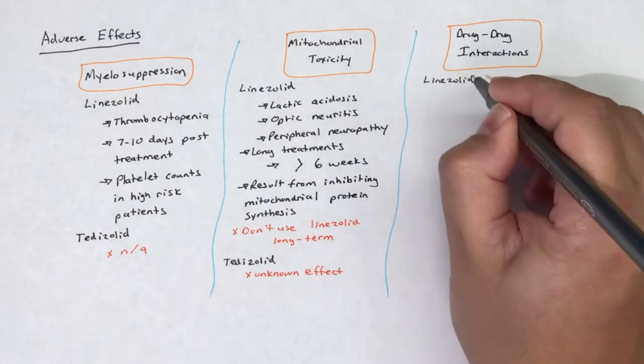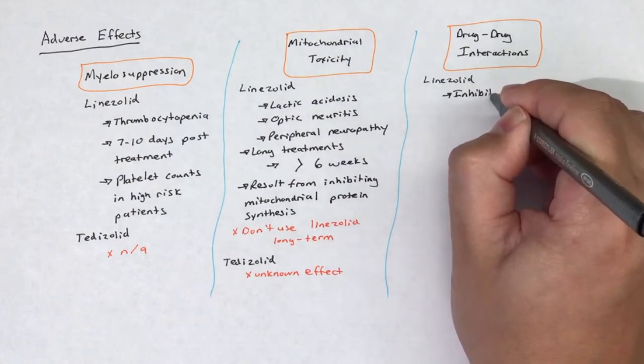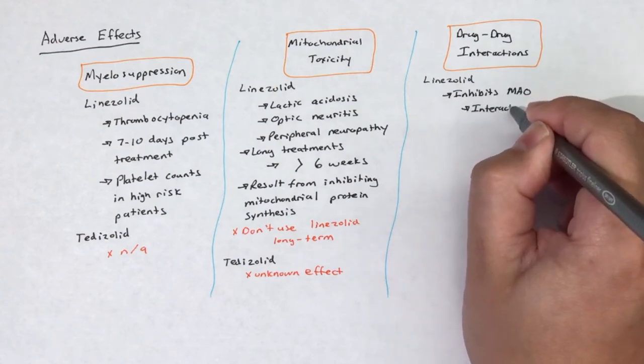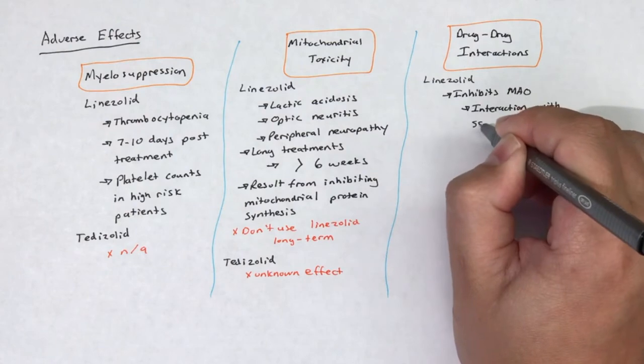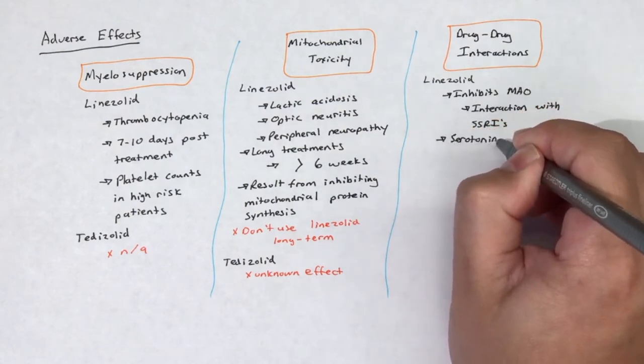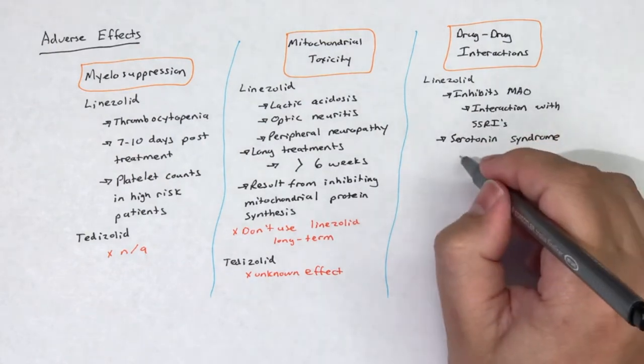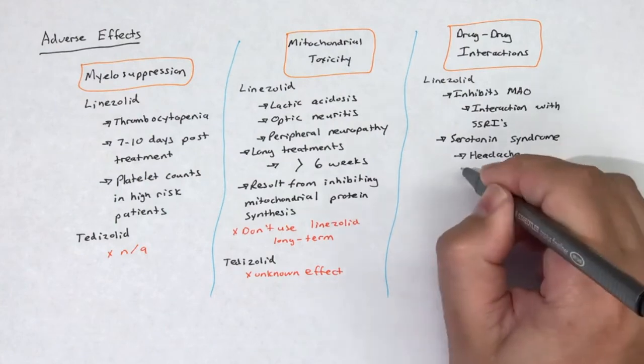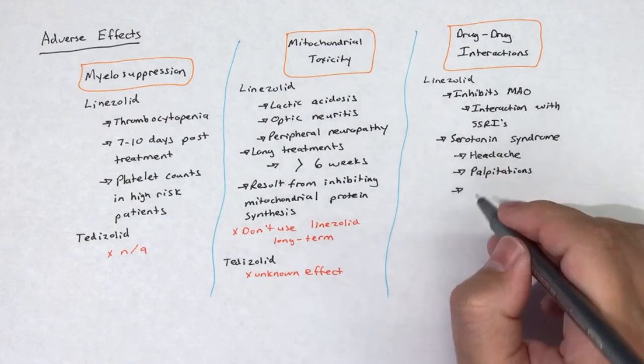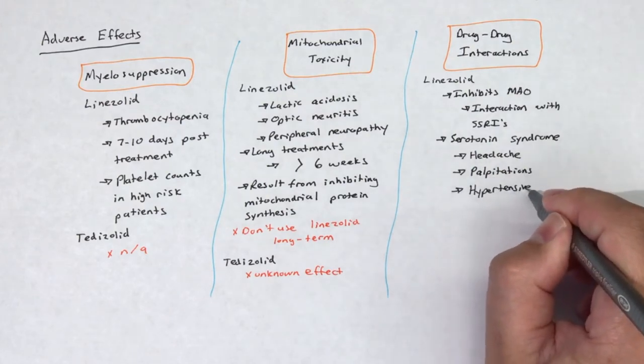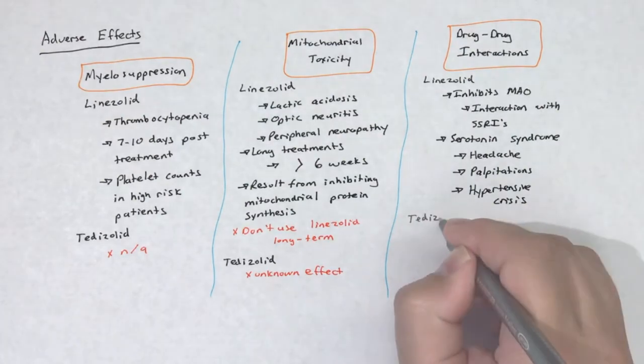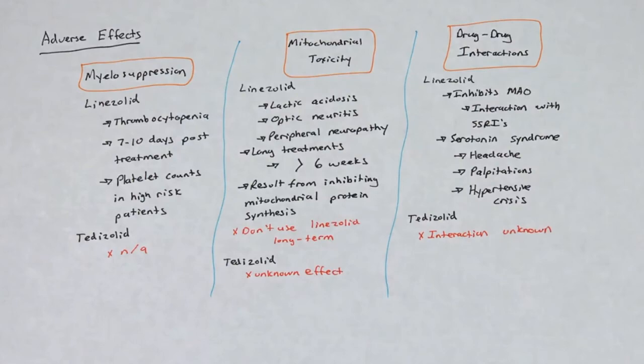In addition to its antibacterial action, linezolid is a weak, nonspecific inhibitor of monoamine oxidase, or MAO. The nonspecific inhibition of MAO sets the stage for potential drug-drug interactions with other adrenergic or serotonergic agents, including the antidepressant selective serotonin reuptake inhibitors, or SSRIs. Co-administration of linezolid with one of these agents can lead to serotonin syndrome, which is potentially life-threatening and can manifest as a headache, palpitations, or a hypertensive crisis. Co-administration should be avoided. The potential interaction with tedizolid is unknown.